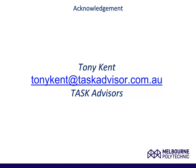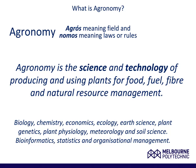What is agronomy? The word agronomy comes from the French word agrominee, derived from the ancient Greek words agros, meaning field, and nomos, meaning laws or rules. The definition of agronomy we will use during this course is that agronomy is the science and technology of producing and using plants for food, fuel, fibre, and natural resource management.